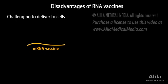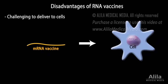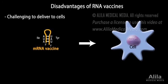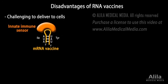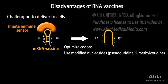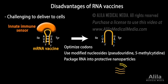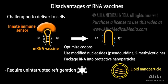On the minus side, it can be challenging to deliver mRNA effectively to the cells, since RNA sequences and secondary structures may be recognized and destroyed by the innate immune system as soon as they are administered intravenously. These limitations can be overcome by optimizing codons, using modified nucleosides to avoid recognition, and packaging RNA into protective nanoparticles. Another disadvantage is that most RNA vaccines require uninterrupted refrigeration for transportation and storage, which can be a hurdle for vaccine distribution.